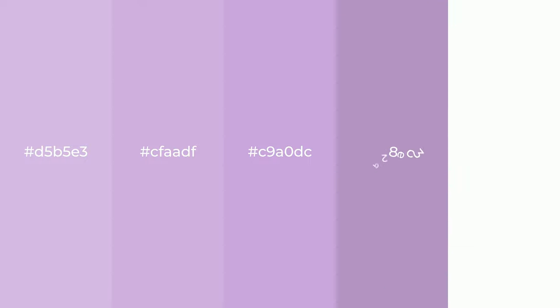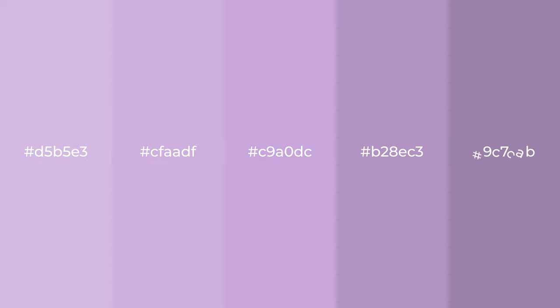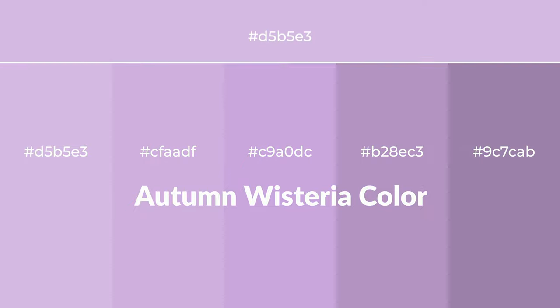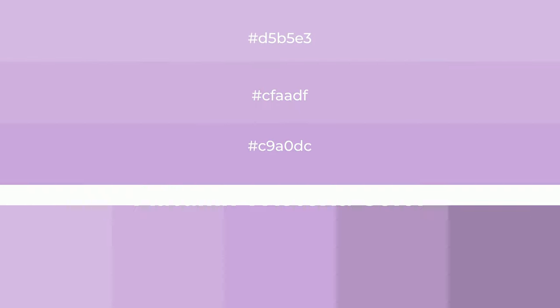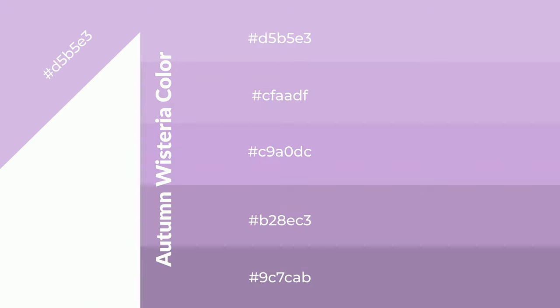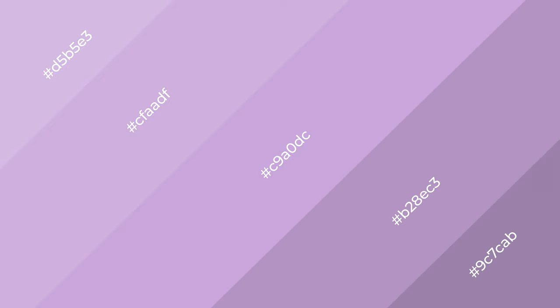Warm shades of autumn wisteria color with violet hue for your next project. To generate tints of a color, we add white to the color — tints create light and exquisite emotions. To generate shades of a color, we add black to the color, and it is used in patterns, 3D effects, and layers — shades create depth and drama. Autumn wisteria is a warm color and it emits cozier and active emotions.